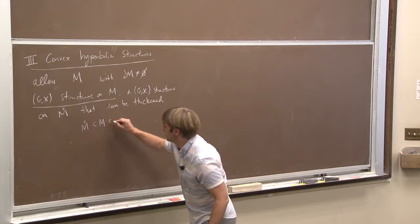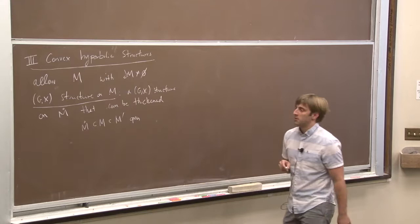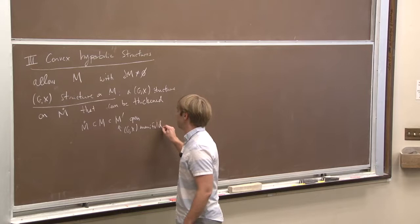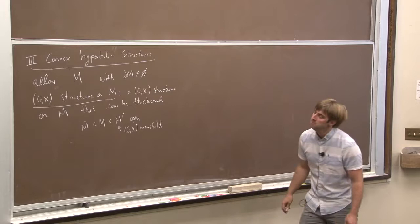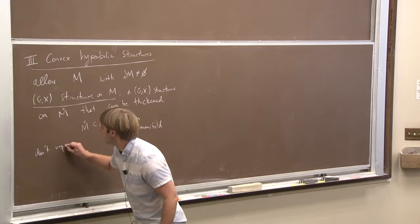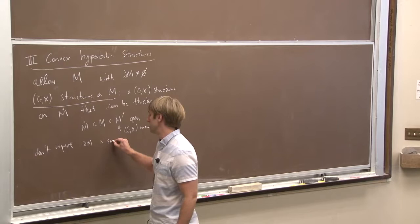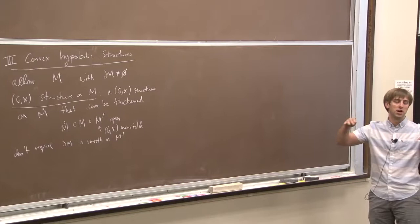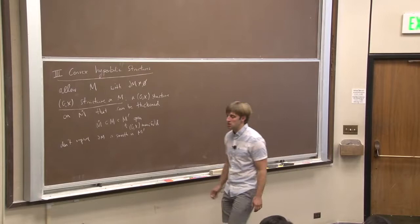I want that to be contained in a larger M prime, which is some open manifold, some thickening of M. I want this to be a larger GX manifold, such that the restriction here is the GX structure that we started with. And note here, I don't require that the boundary of M is smooth. In particular, I'd like to consider geometric structures on M where maybe the boundary looks like a pleated surface or a bent surface.